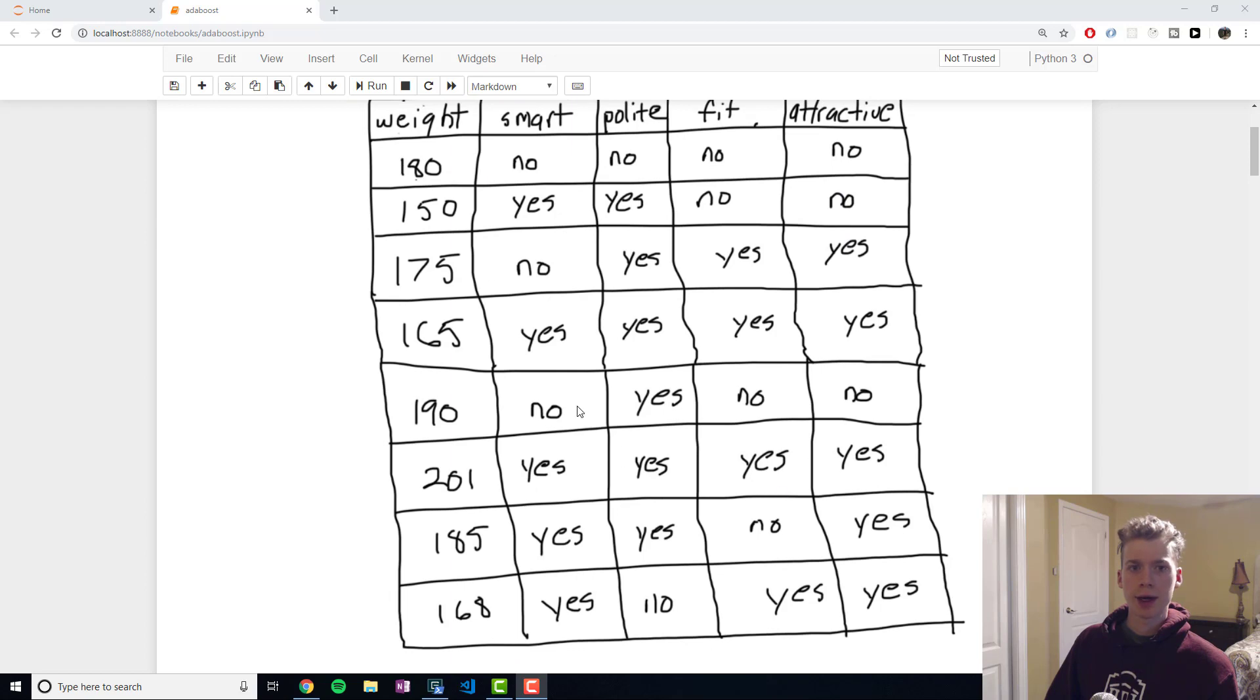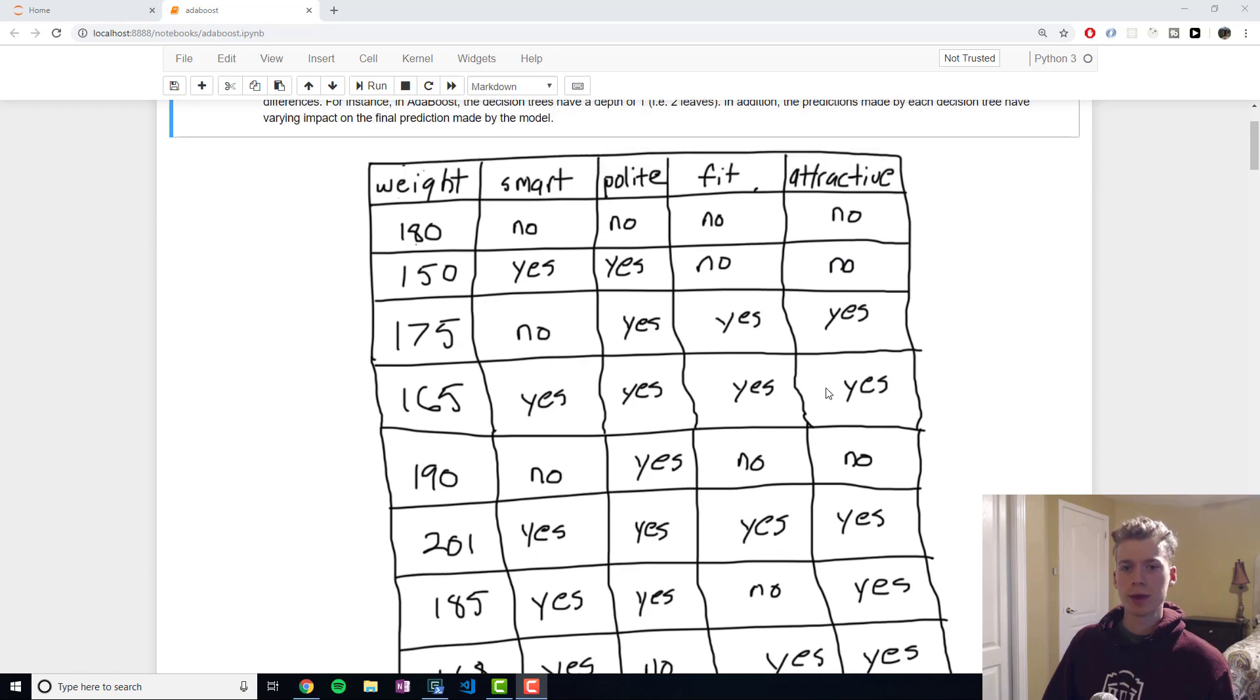This is our dataset right here. We are going to be predicting whether a person is attractive or not based off certain features. The features we have are weight, whether they're smart, whether they're polite, and whether they're fit.